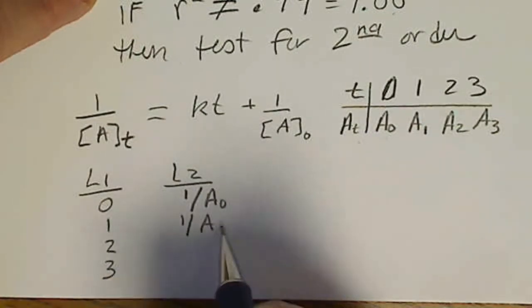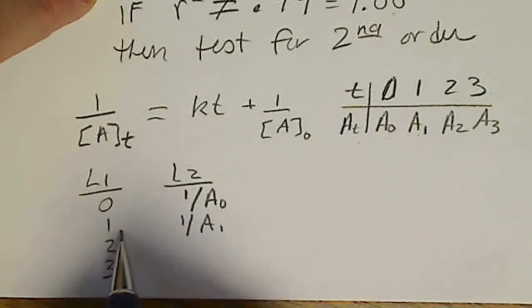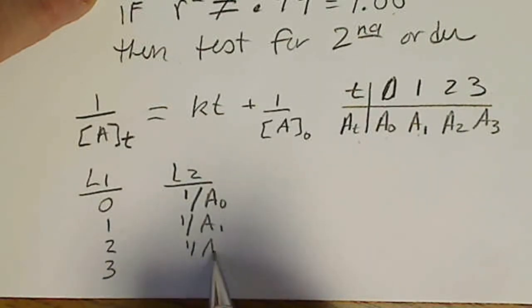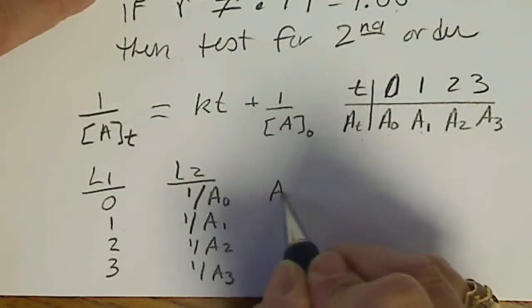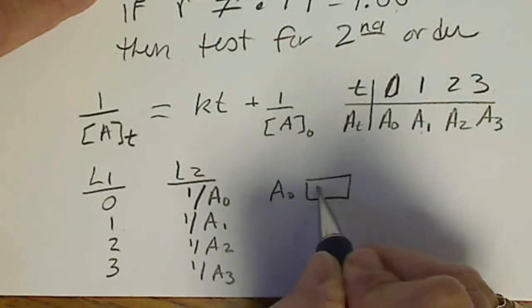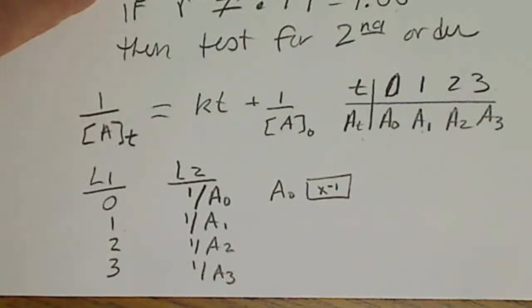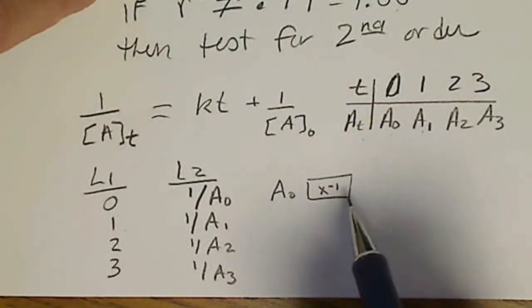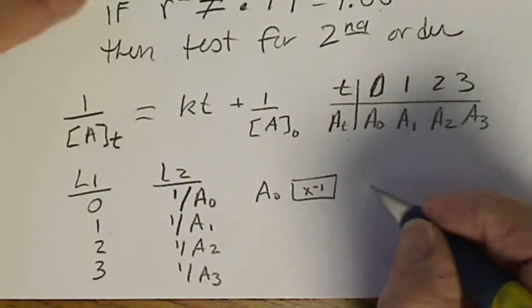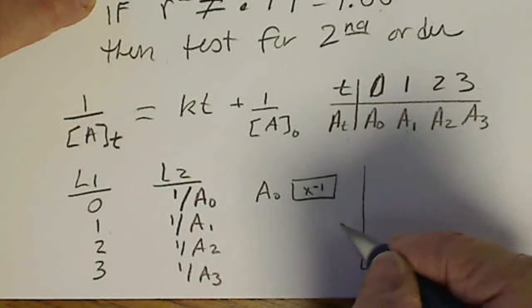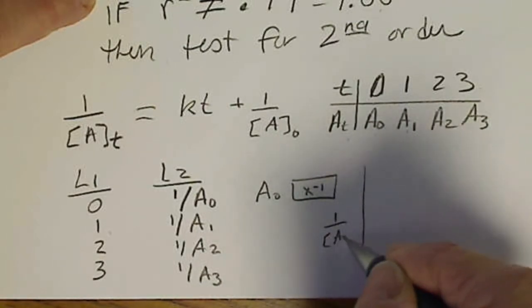And then L2, we're going to take 1 over the concentrations that are given. So 1 divided by A at time 1 would go with 0.1, 1 over A at 0.2, and 1 over A at 0.3. You could also plug in the value given and hit your X to the minus 1 key if you want to save a keystroke.